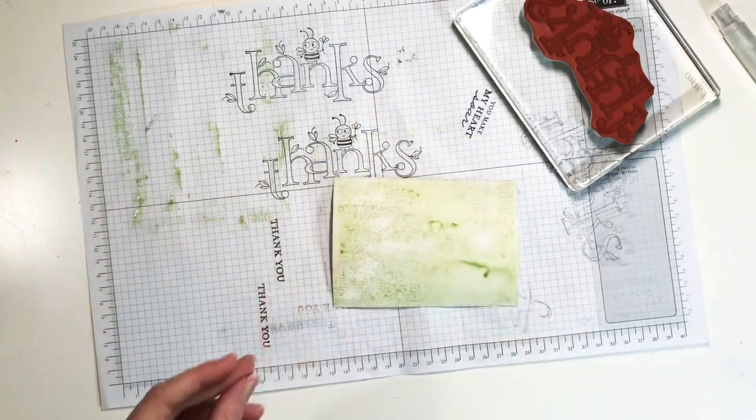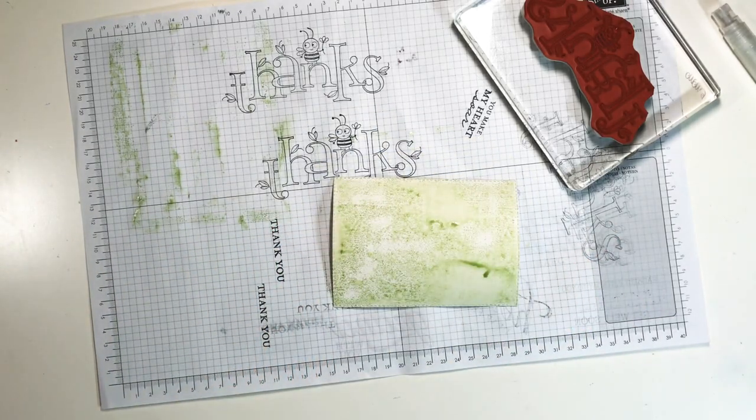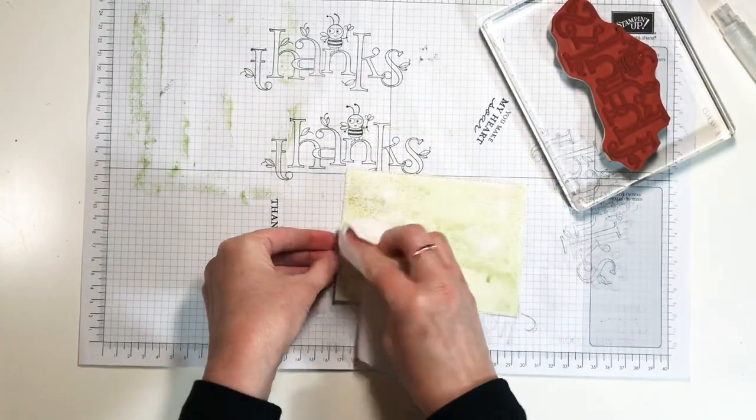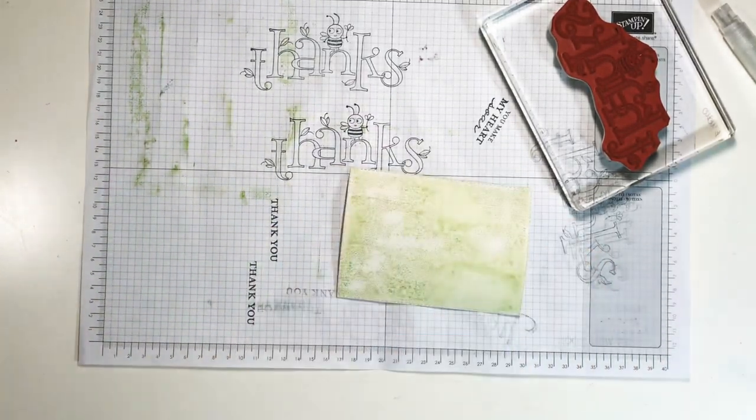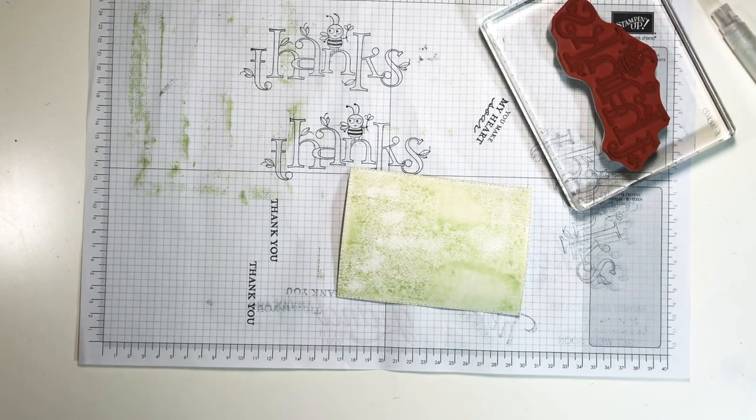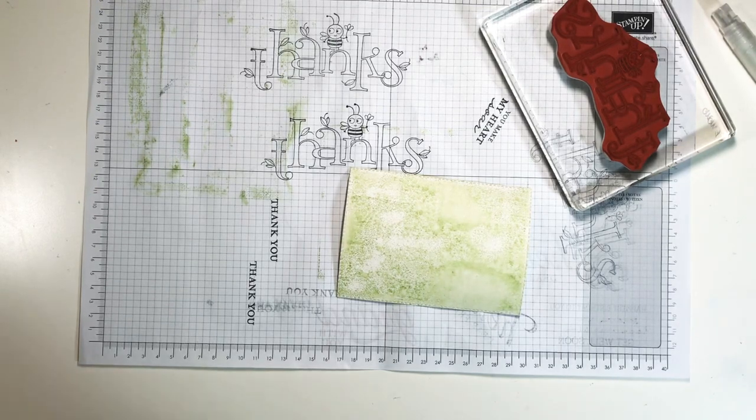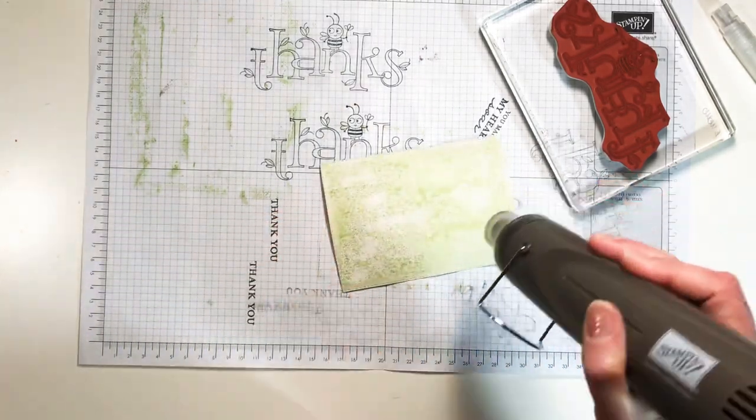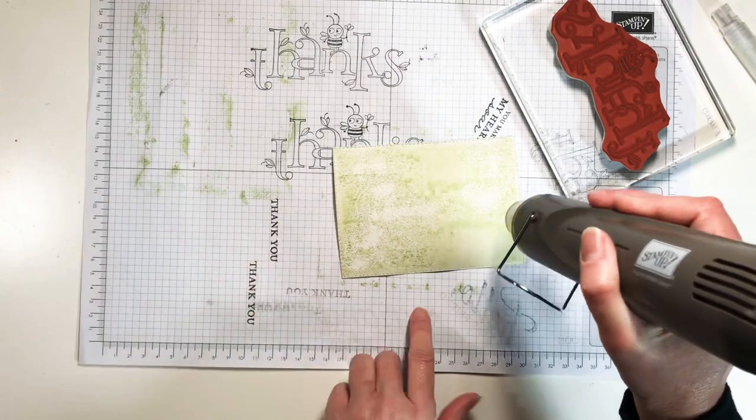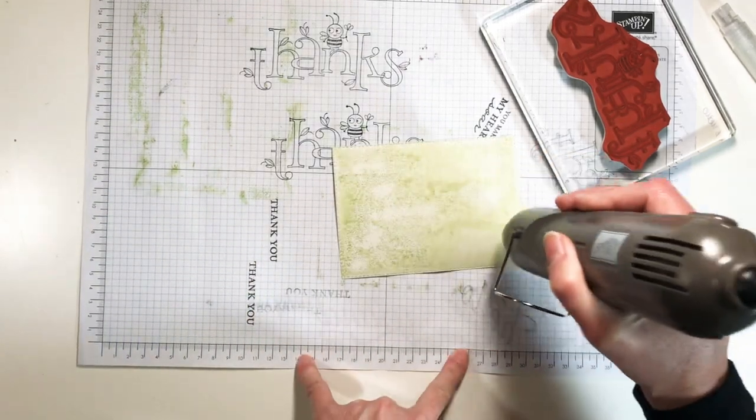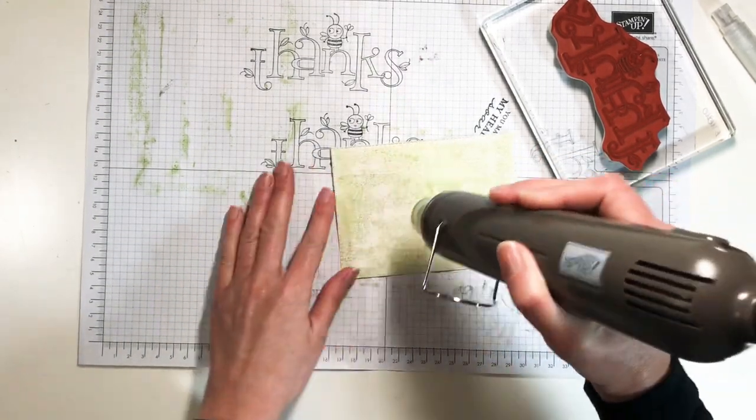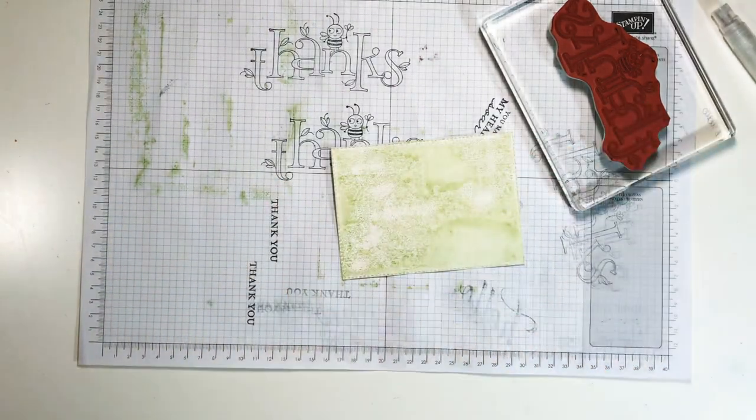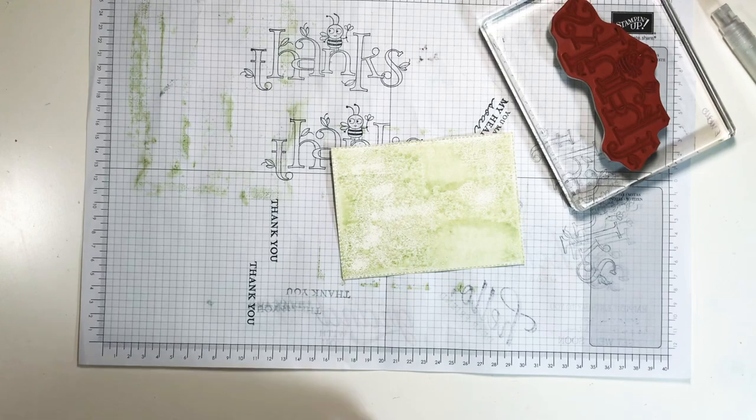Now you can see it's just a little bit wet so I'm going to grab a tissue and just dab at those extra water spots because I don't want it to look like it's pooled up. Now before we can stamp on it we need to dry it so I'm going to hit it with my heat tool really quick and that does dry pretty quickly.